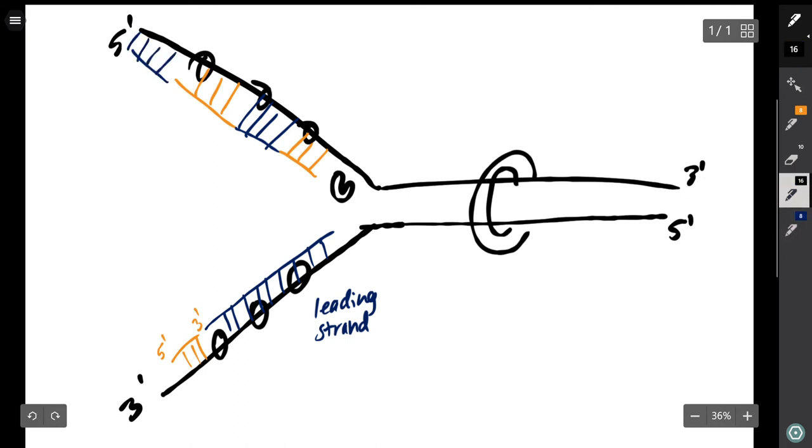This strand is known as the lagging strand since it is being synthesized discontinuously. These short fragments are called Okazaki fragments.